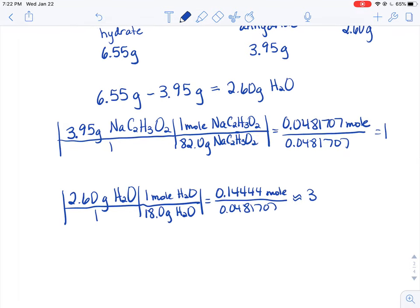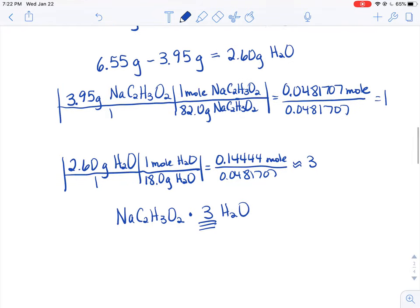So what does that mean? That means for every 1 sodium acetate, I have 3 moles worth of water attached. The name we would give to this hydrated form is sodium acetate trihydrate. Three waters are attached to each sodium acetate formula unit.